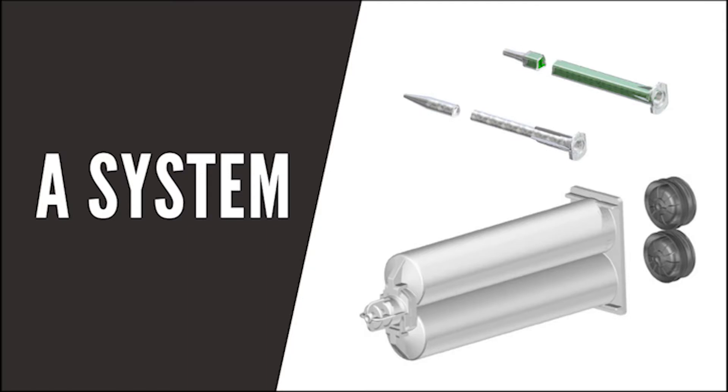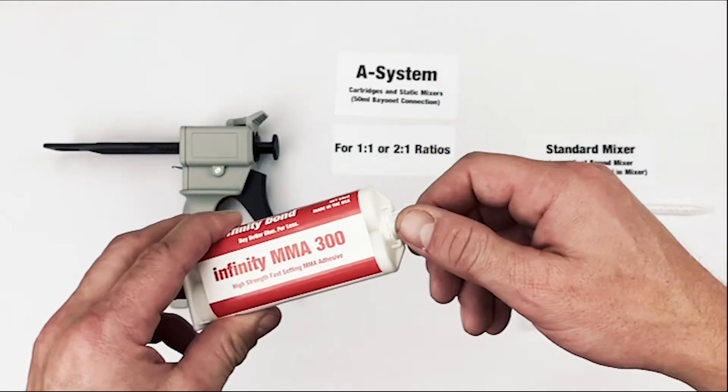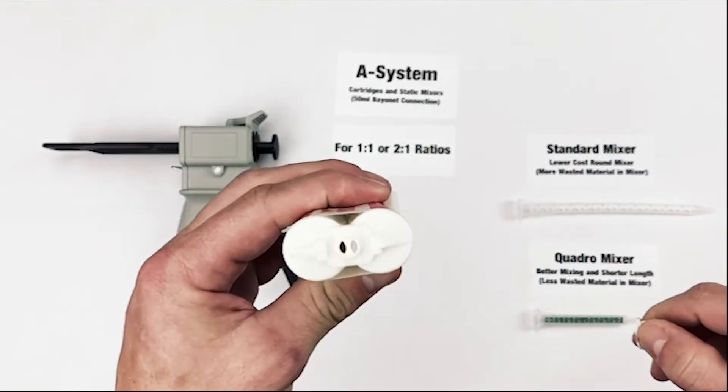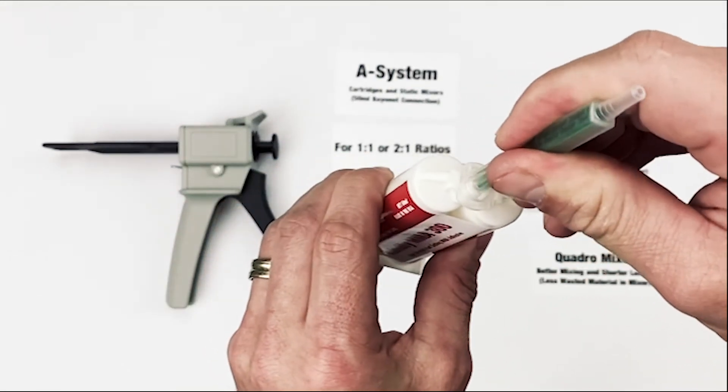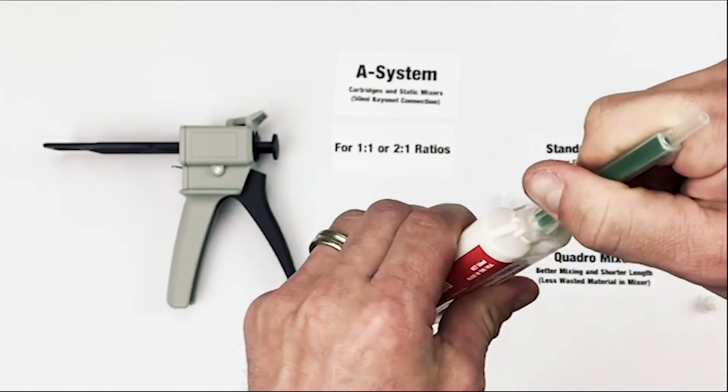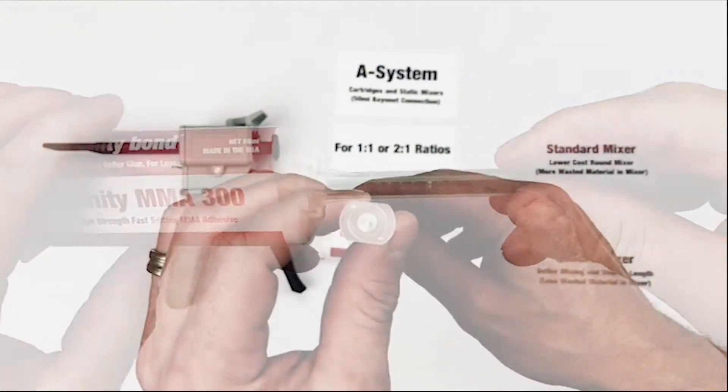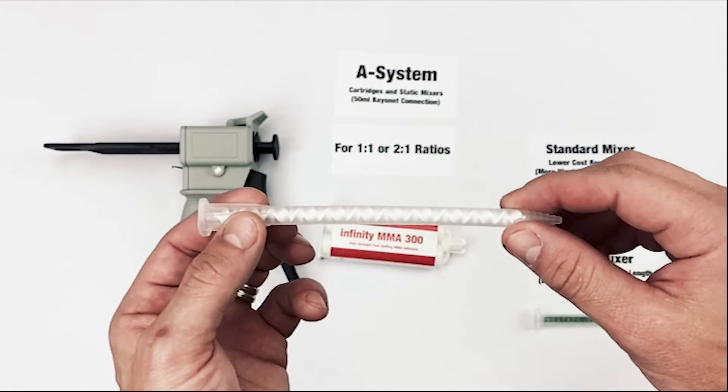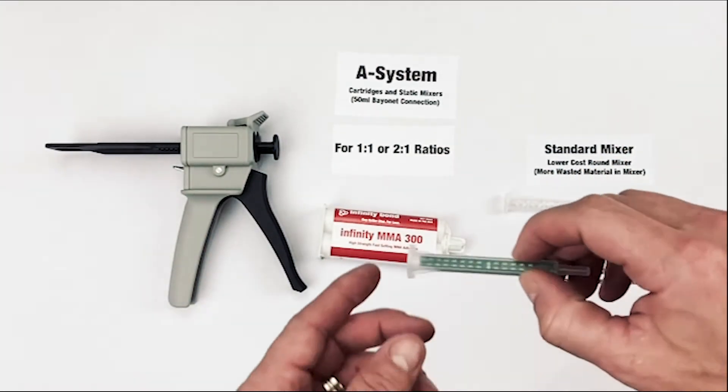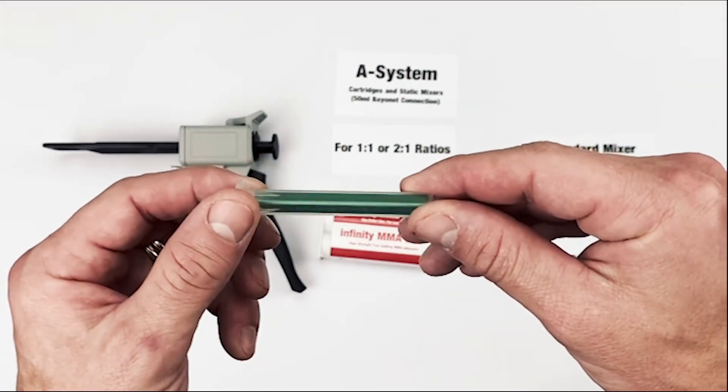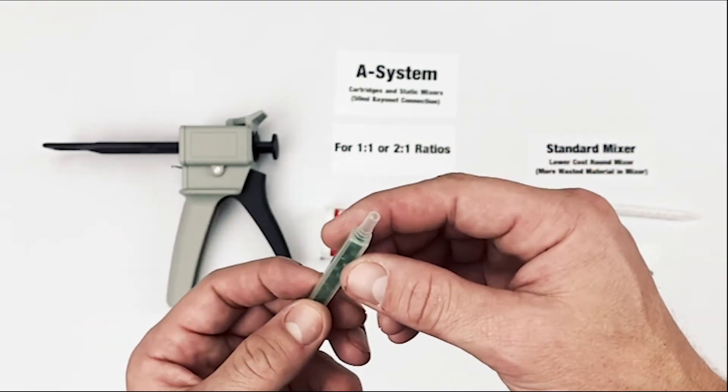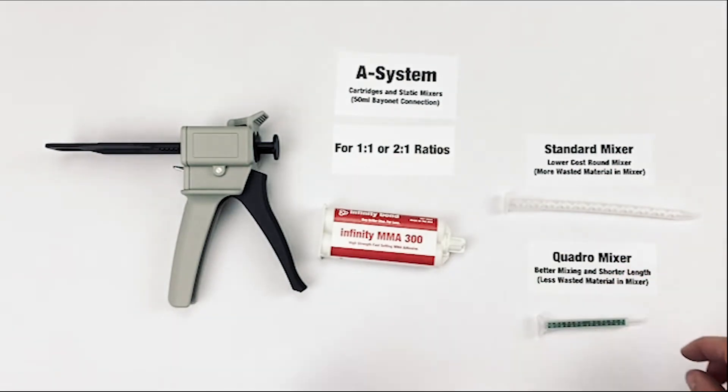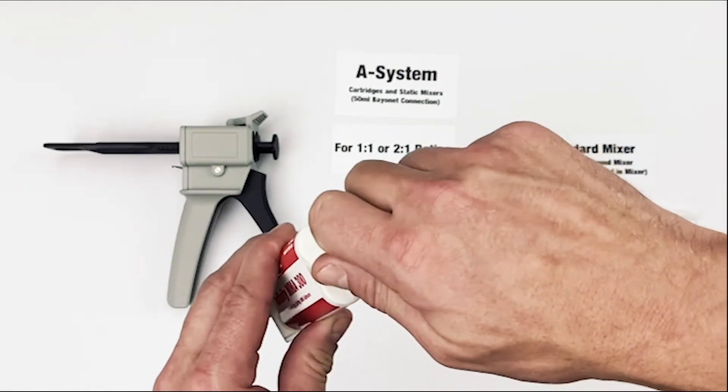Static mixers for 50ml cartridges. Bayonet mixers A-System. Let's start with A-System cartridges and mixers. Static mixers for A-System cartridges are often referred to as bayonet style and they simply twist and lock in place before dispensing. Bayonet mixers are used when dispensing 1 to 1 or 2 to 1 ratio adhesives from 50ml cartridges. Bayonet mixers come in two versions, Standard and Quadro. If you're dispensing out of an A-System 50ml cartridge, you will need to use some type of bayonet static mixer nozzle.